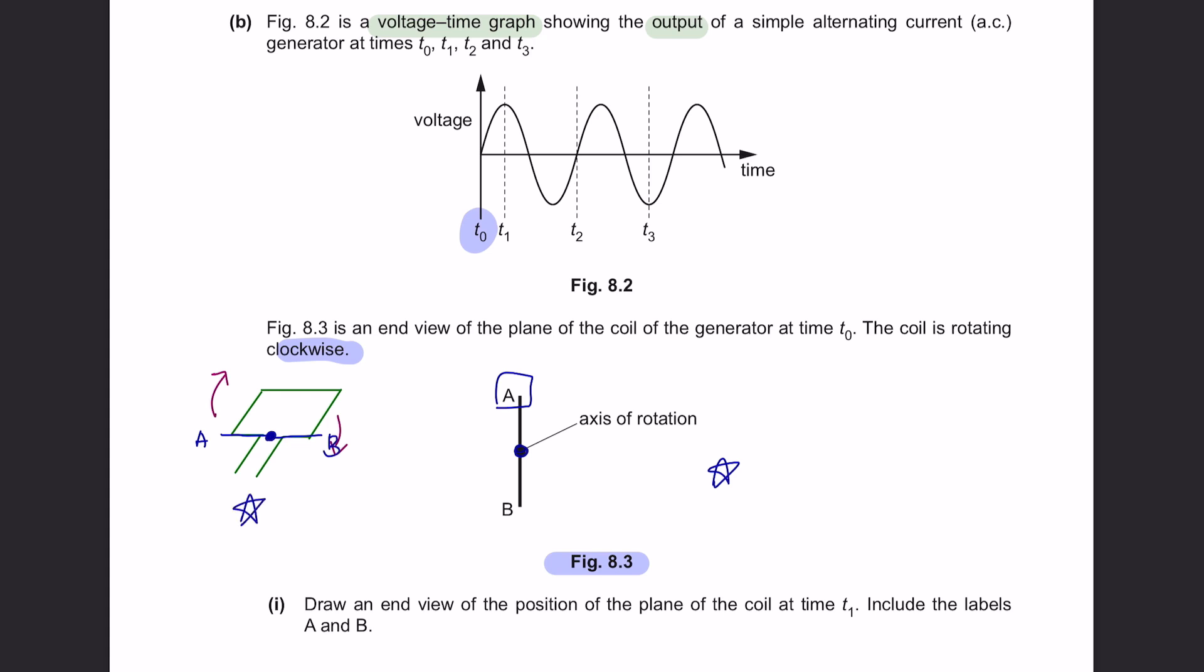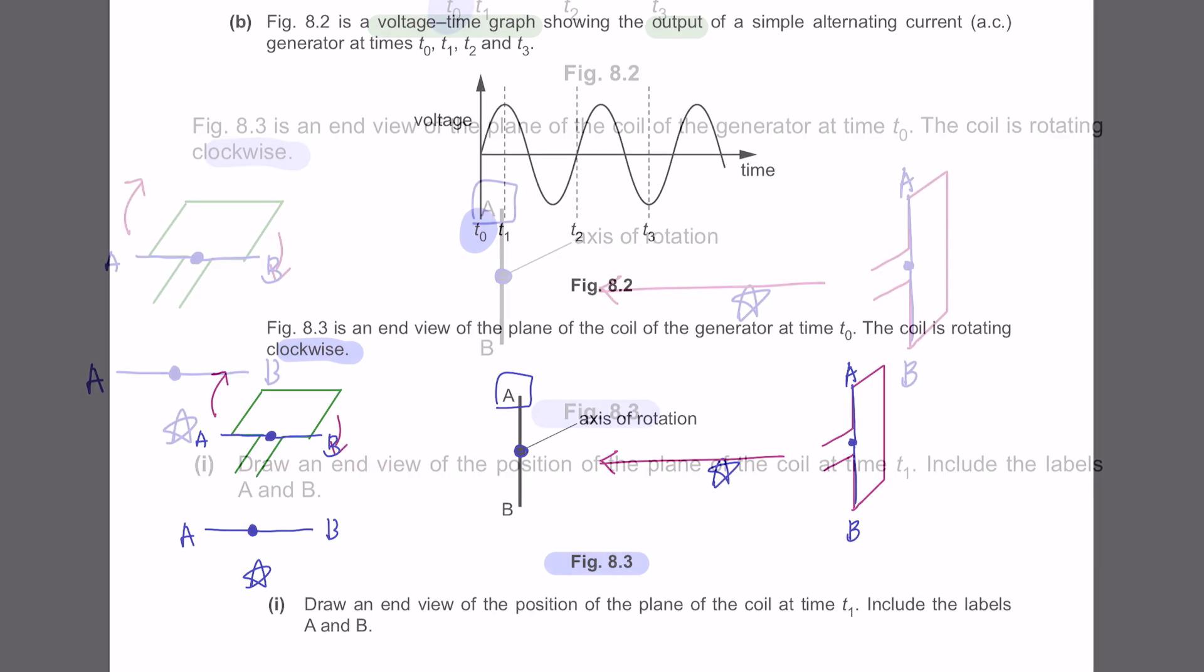If the coil was in this position, you would see it like this. And figure 8.3 here is showing the axis of rotation when the coil is in this position. That's why terminal A is here, and B lays like this. Now, let's look into our question.